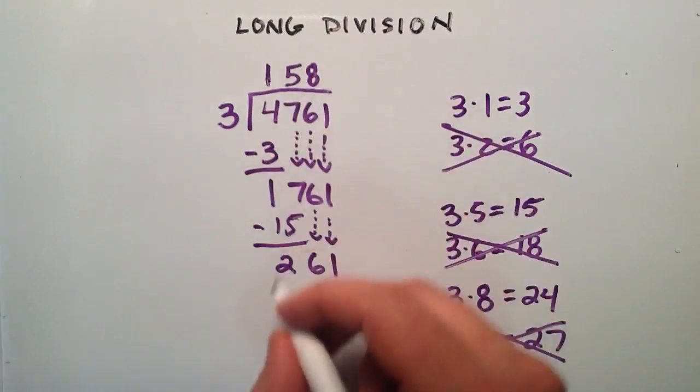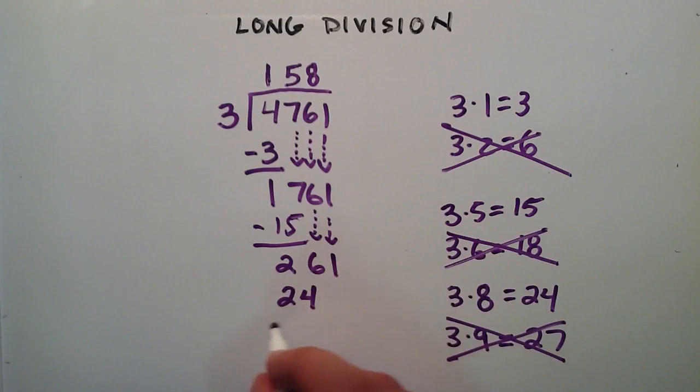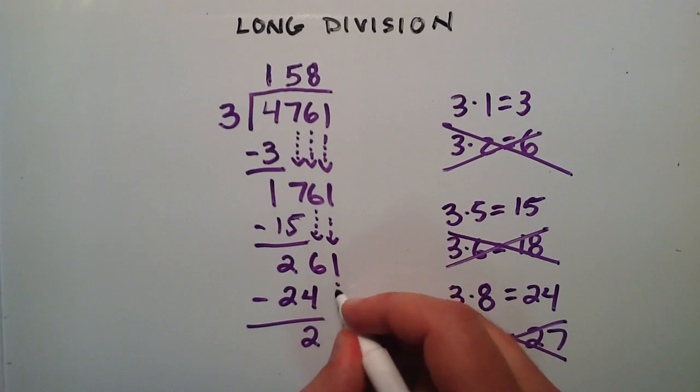So therefore we take the 8 and place it up here. 3 times 8 gives us 24. And 26 minus 24 gives us the number 2. And the 1 falls down.